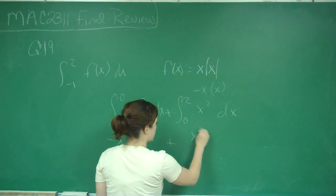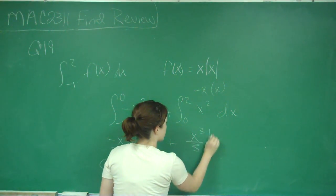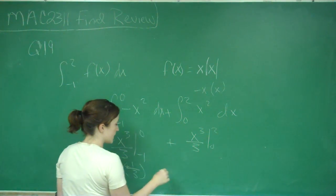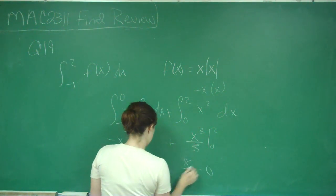And then plus, again this is also x cubed over 3 from 0 to 2. And so 2 plugged in will give me 8 thirds minus 0.